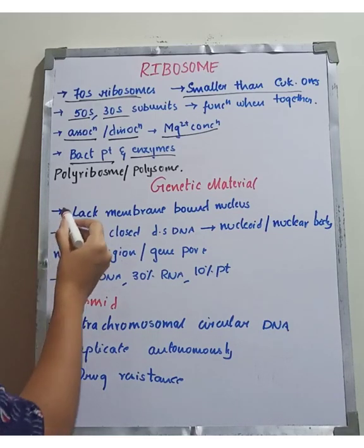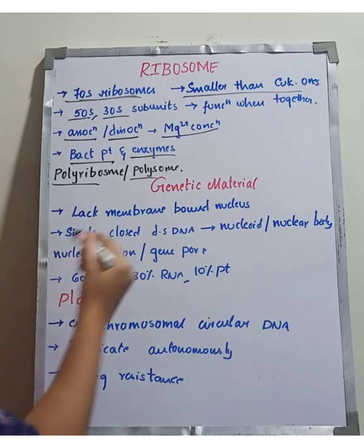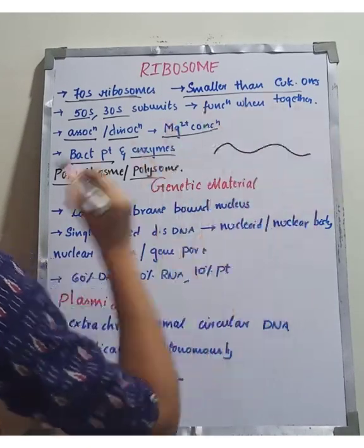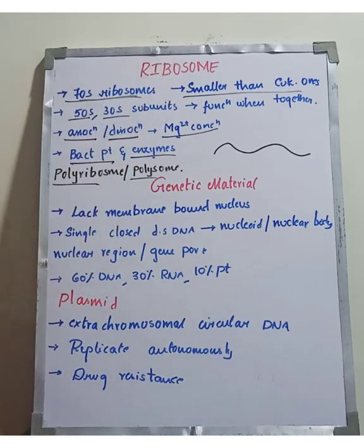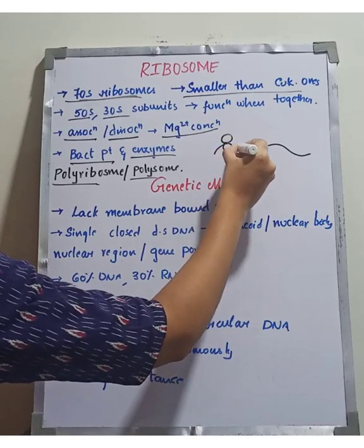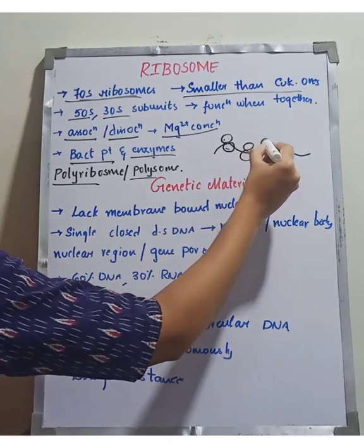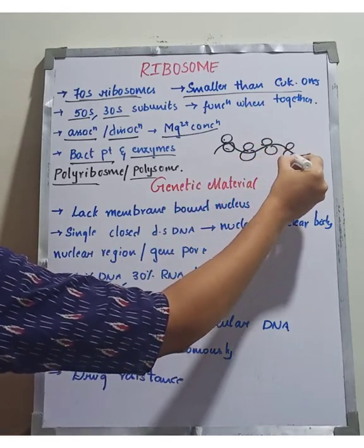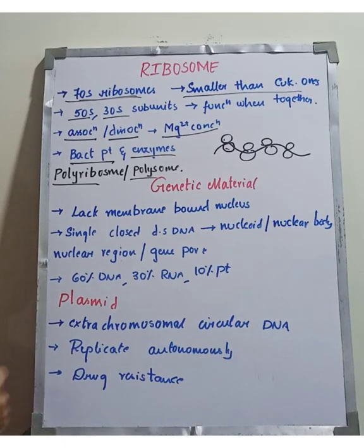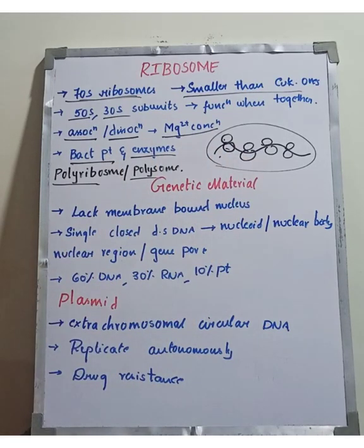There are also polyribosomes, or polysomes. A polyribosome is formed when mRNA associates with multiple ribosomes. The ribosome is made of 50S and 30S subunits. When mRNA associates together with ribosomes, the complex is called a polyribosome.